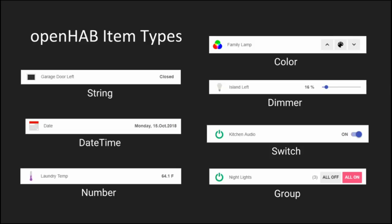So, what do I mean by storing state? If you have a programming background, items are basically variables in your program that store a value used by the rest of your program. In the same way, items store a value which can be set by the thing channel it's linked to, the user interface, a rule, or a persistence strategy. More about those later.